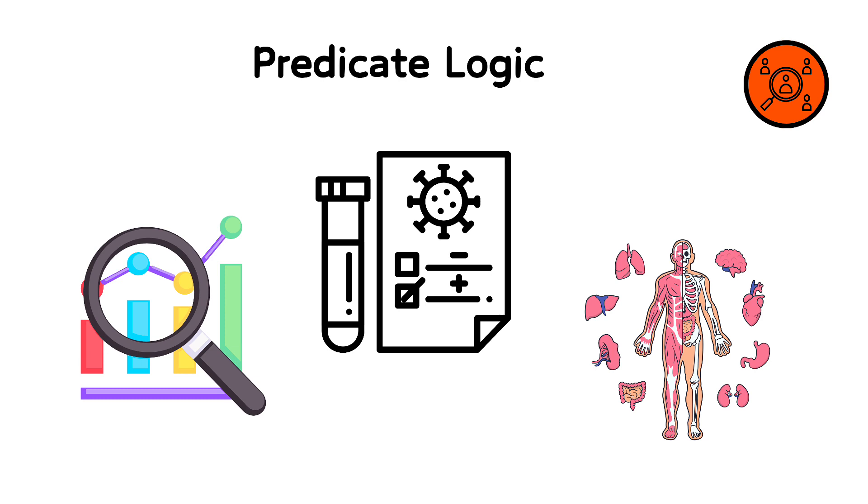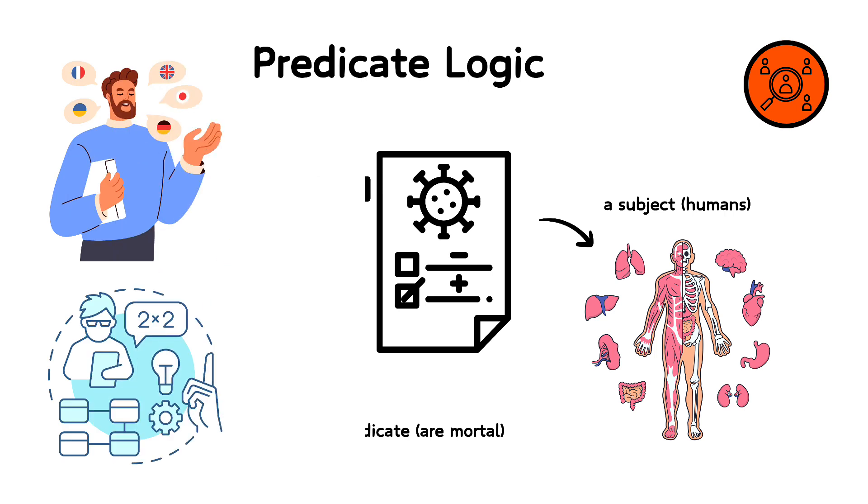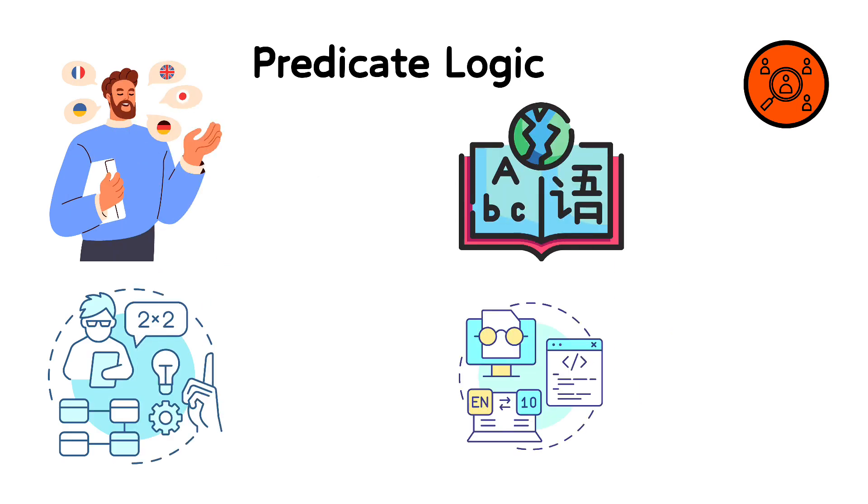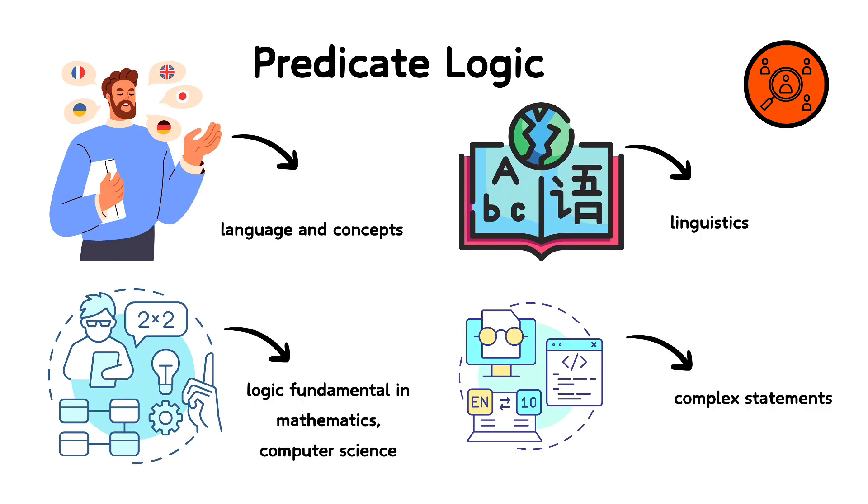For example, all humans are mortal can be expressed with a universal quantifier, all, and a predicate, are mortal, applied to a subject, humans. This allows for a much richer exploration of language and concepts, making predicate logic fundamental in mathematics, computer science, and linguistics for formulating and proving complex statements about sets of objects and their attributes.